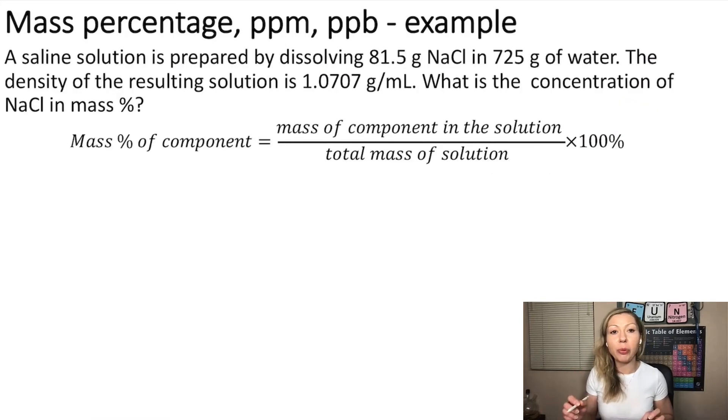A saline solution is prepared by dissolving 81.5 grams of sodium chloride in 725 grams of water. The density of the resulting solution is 1.0707 grams per milliliter. What is the concentration of sodium chloride in mass percent?